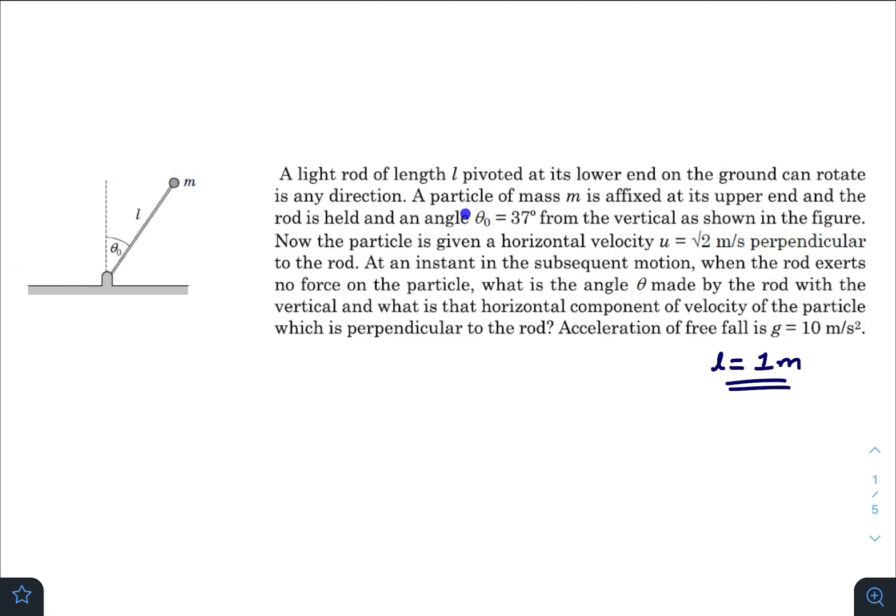A particle of mass m is affixed at its upper end and the rod is held at an angle θ₀ = 37°. Now the particle is given a horizontal velocity u = √2 m/s perpendicular to the rod.